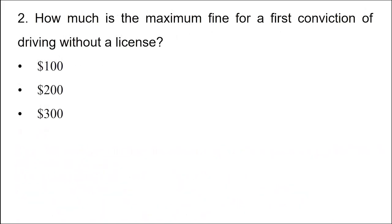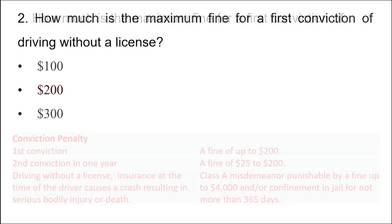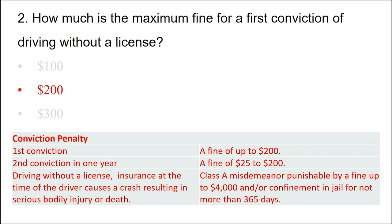Question: How much is the maximum fine for a first conviction of driving without a license? Option 1: $100. Option 2: $200. Option 3: $300. The answer is option 2: $200. Conviction penalties: first conviction is a fine of up to $200. Second conviction in one year is a fine of $25 to $200. Driving without a license when the driver causes a crash resulting in serious bodily injury or death is a Class A misdemeanor, punishable by a fine of up to $4,000 and/or confinement in jail for not more than 365 days.